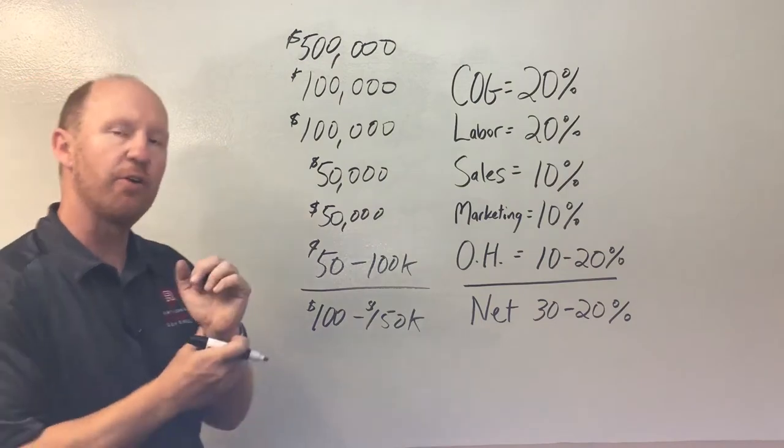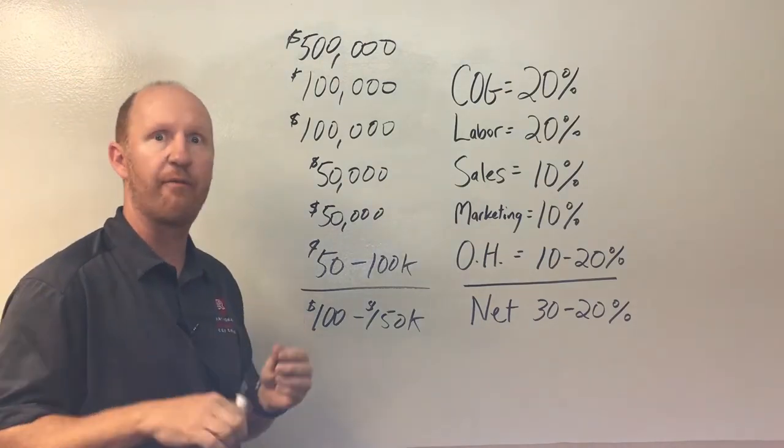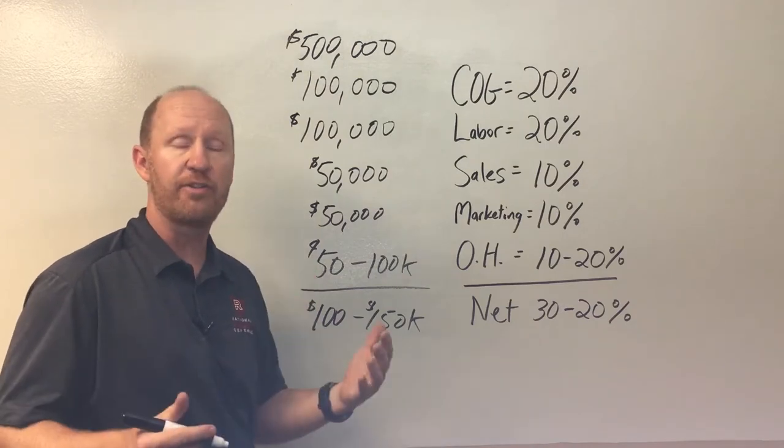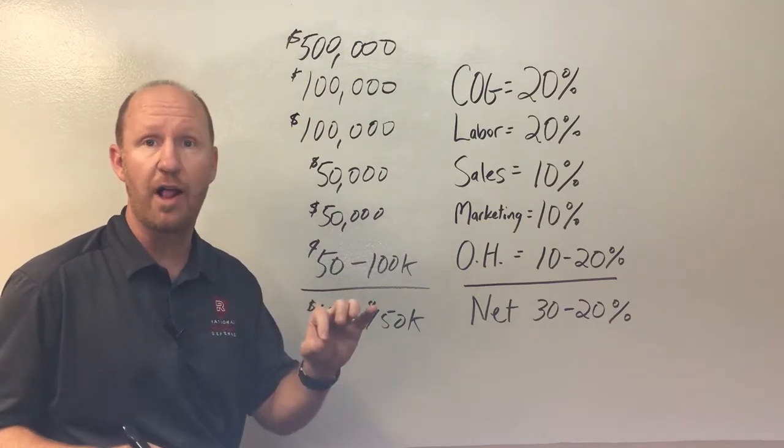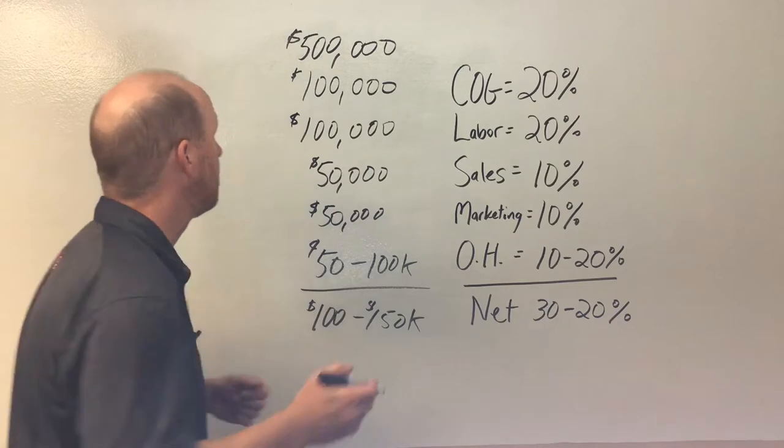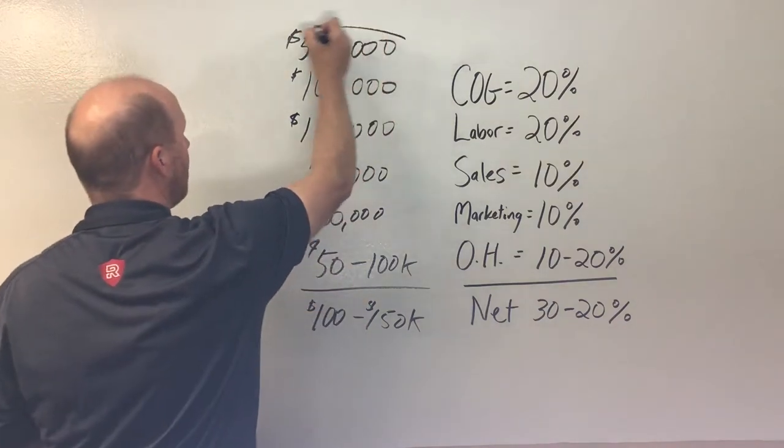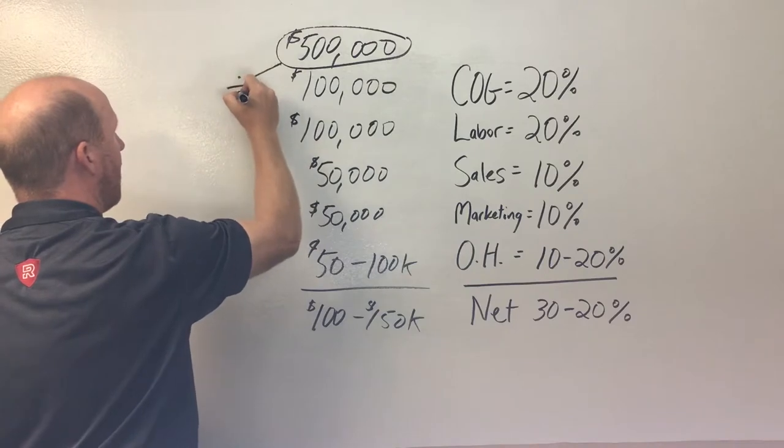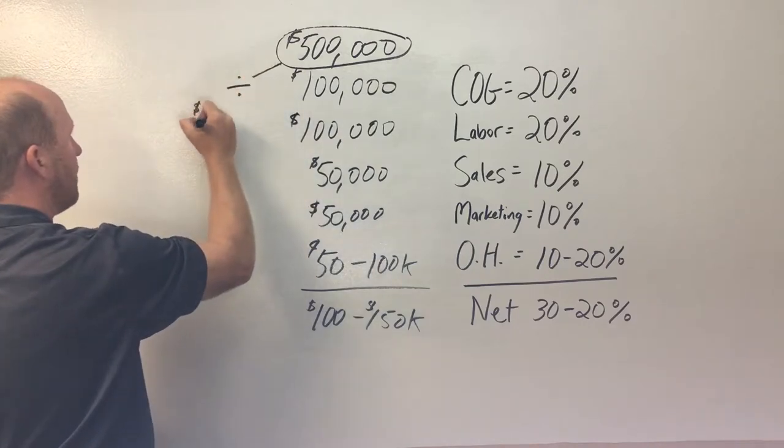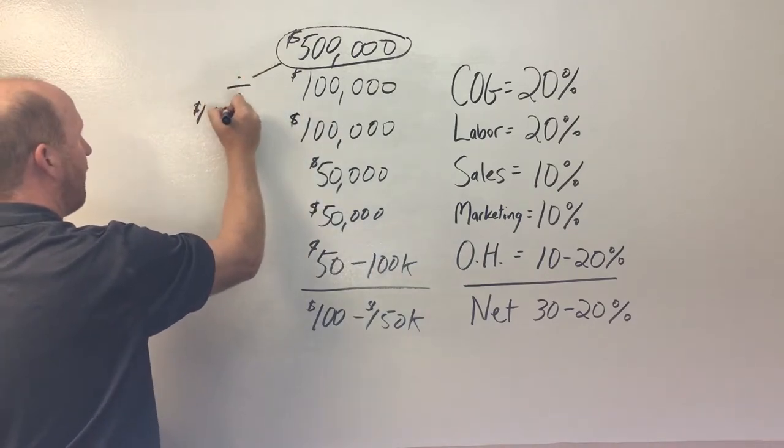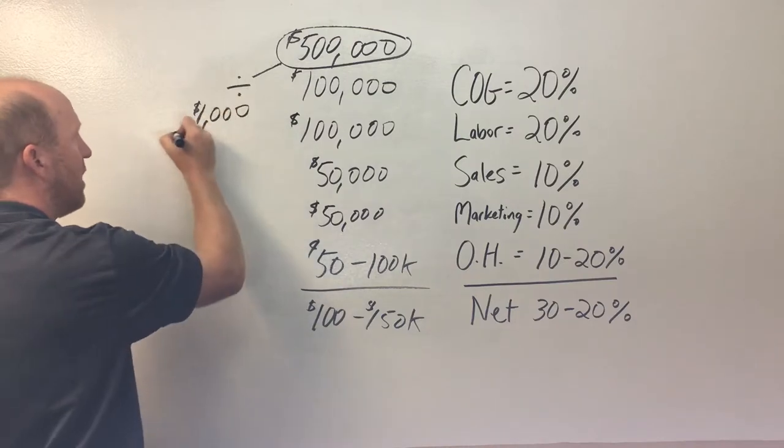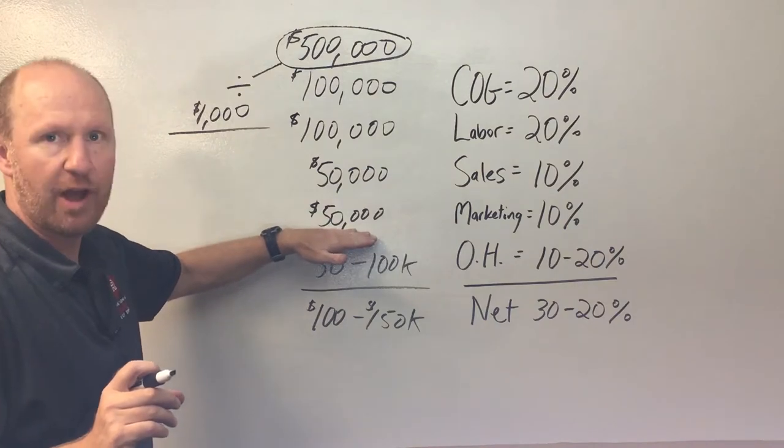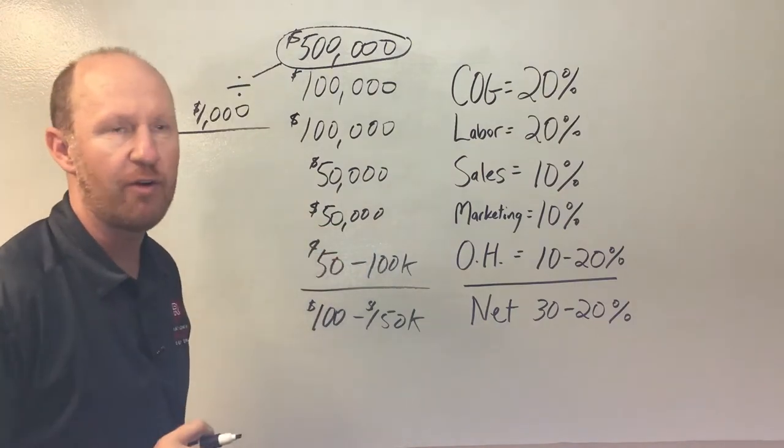Now, in order to achieve those numbers, we're going to take a look at that average dollar per sale and average dollar per lead. In our previous example, we used a $1,000 average dollar per lead. So if we take this half a million dollars, and we divide it by that $1,000 average dollar per lead, how many leads is our marketing budget of $50,000? How many do we need to generate?